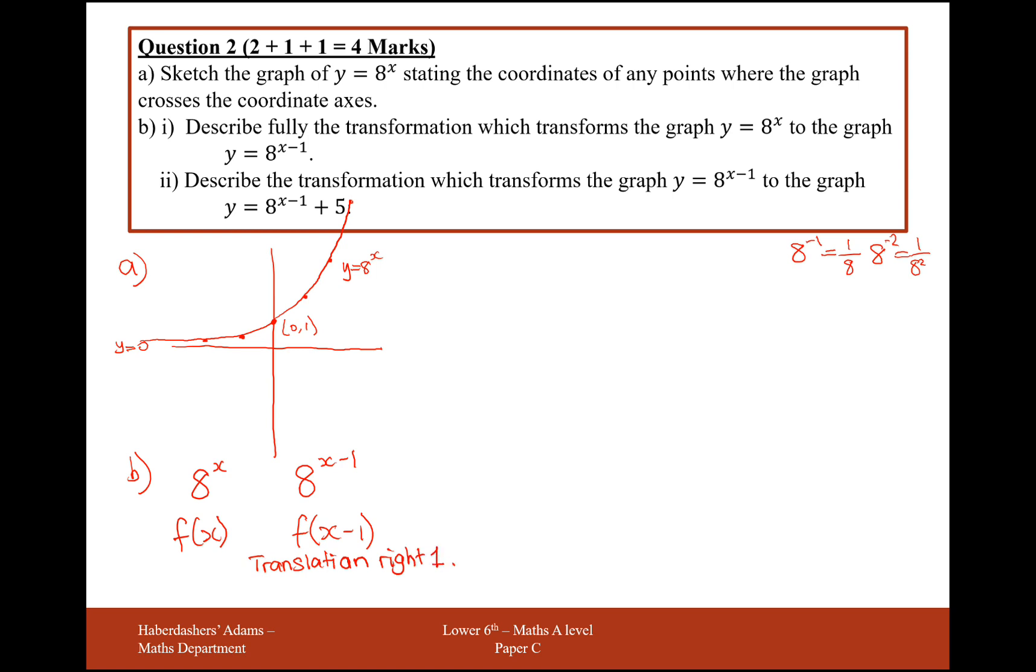This is one of the standard graph transformations. If the minus 1 was outside the bracket, it would move it down. If it was a plus 1 inside the bracket, it would move it left. If it was a plus 1 outside the bracket, it would move it up.